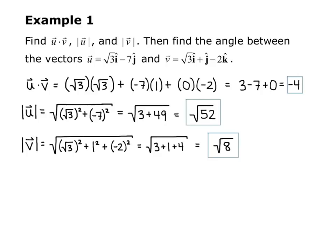Now I know I could break this down further, because 4 is a perfect square and it's a factor of 8, so I could break this down into 2 square root of 2, but I'm just going to leave it for the time being, because we're going to use it to find the angle between the two vectors.